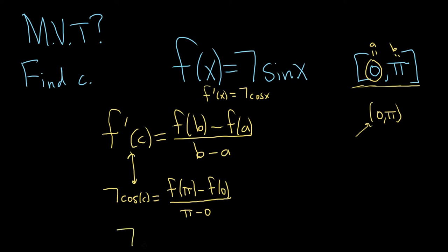All right, so you have 7 cosine of c equals, so f of π, so you're going to plug it into the sine function. So it'll be 7 sine π minus 7 sine 0. And that's all over π.